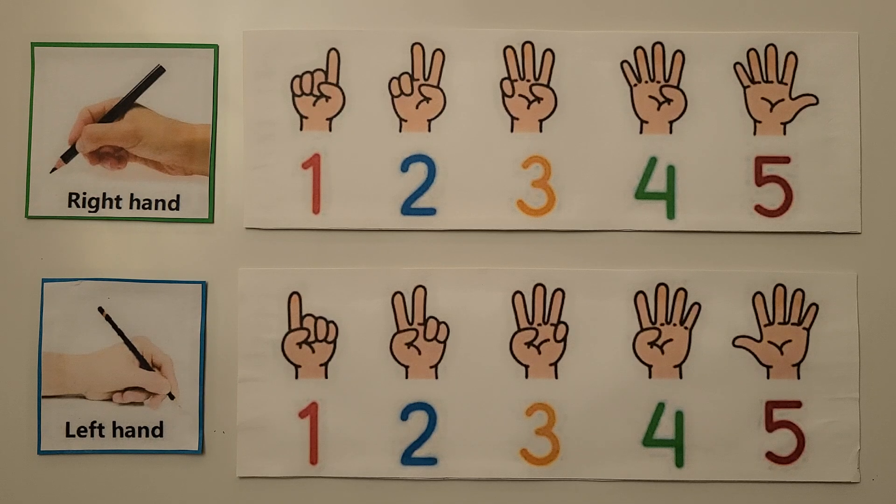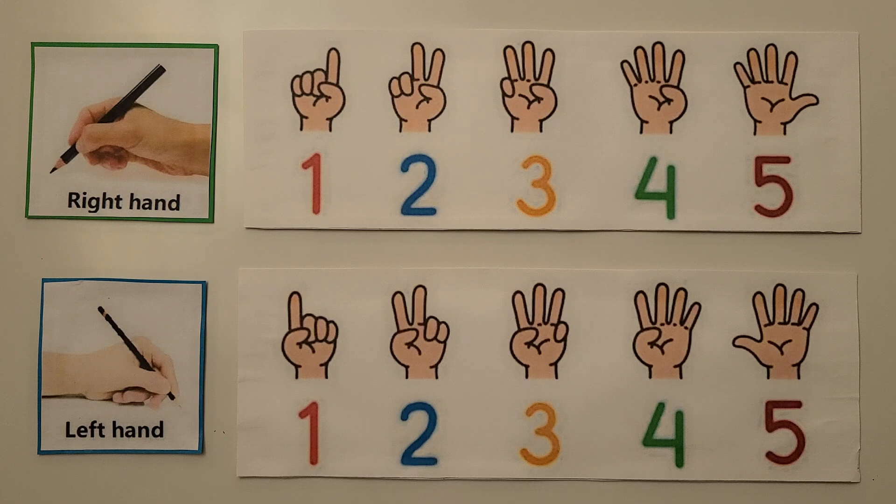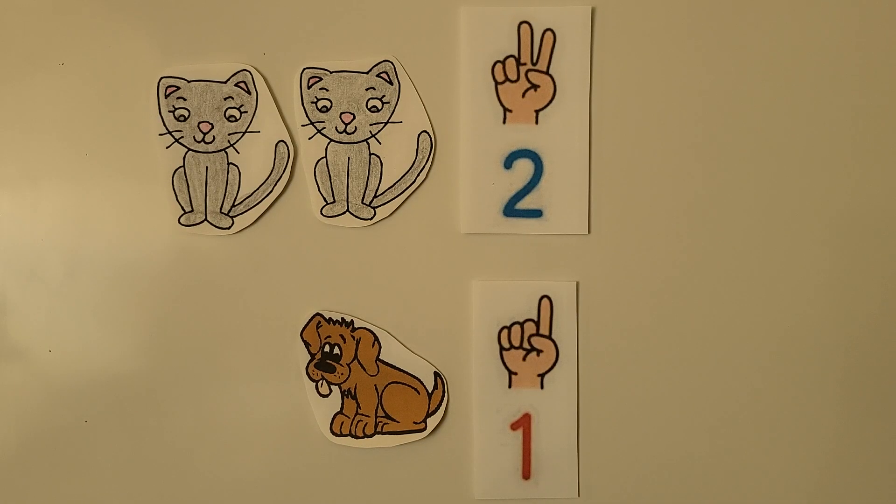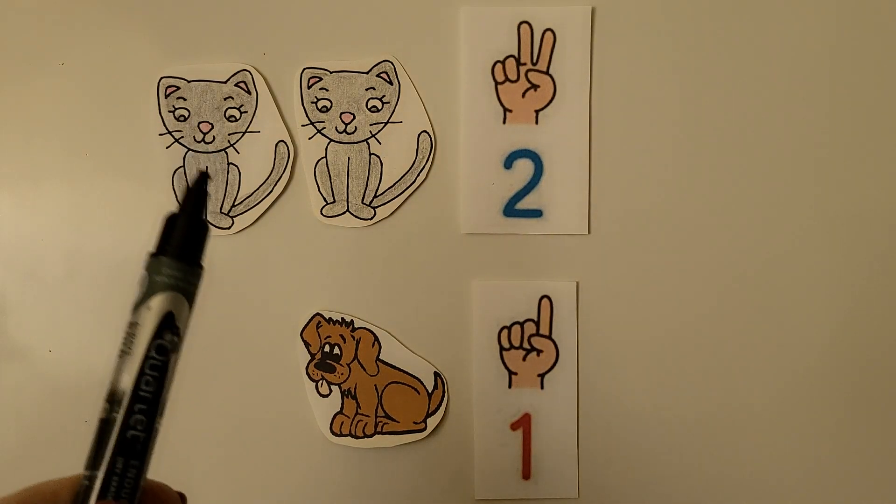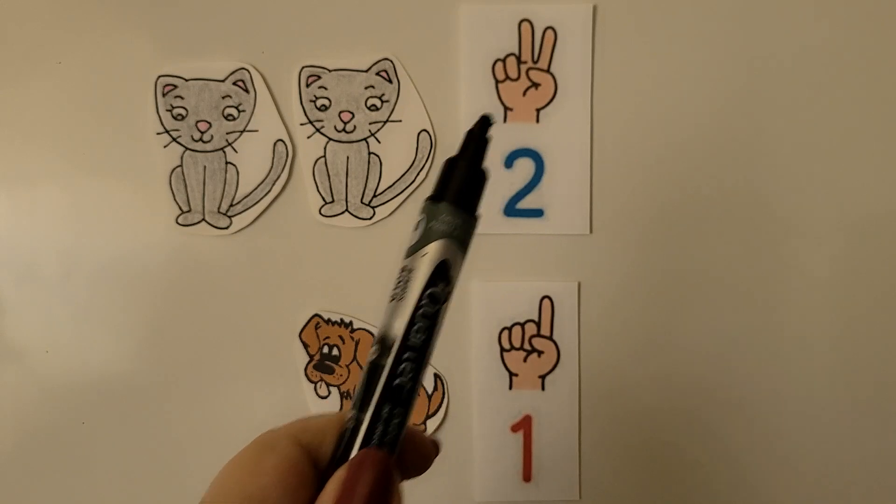We can use our fingers to count objects. We can use our fingers to help us count and show how many are in a set. When we count the cats, we count 1, 2. We hold up 2 fingers.